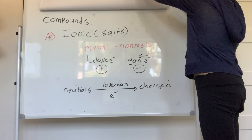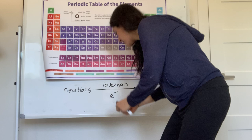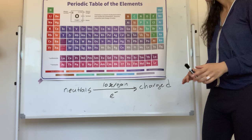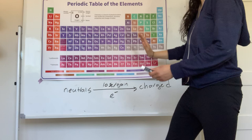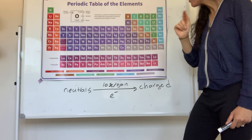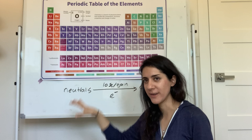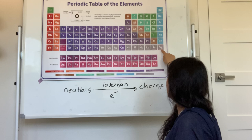Take out your periodic table. We're going to go over what happens to elements when they form a compound. In chemistry, it's considered really good to look like a noble gas — group 8A. Think of noble gases as the celebrities of the periodic table; everyone wants to look like them. So elements lose or gain electrons to achieve a noble gas electron configuration.